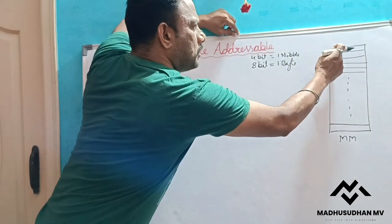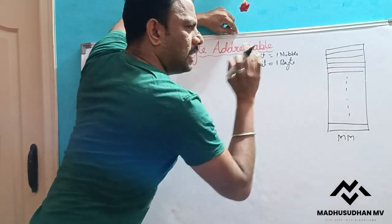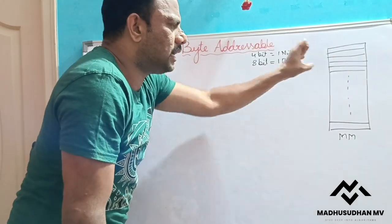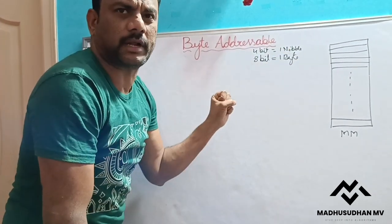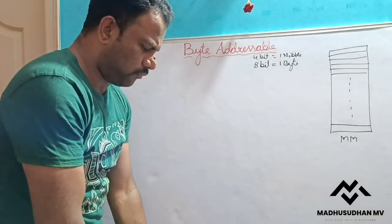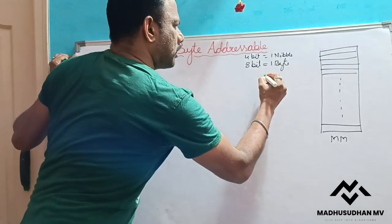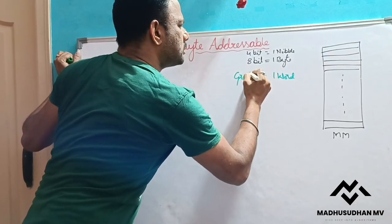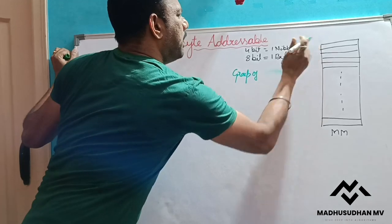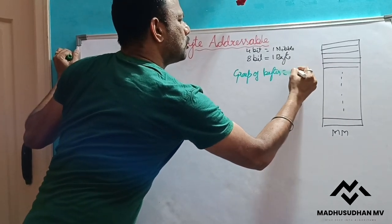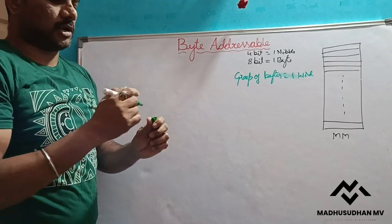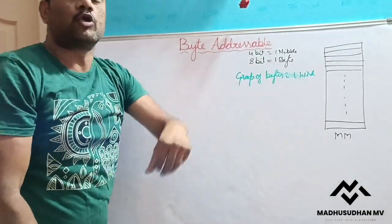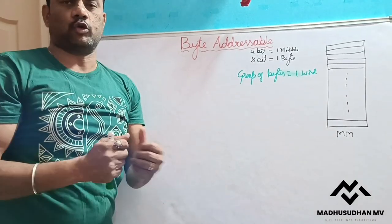Now, even taking data one byte at a time would be too slow for the CPU. So our CPU deals with the concept of a word. One word is a group of bytes. For example, one word is a group of bytes equal to some number of 8-bit units.